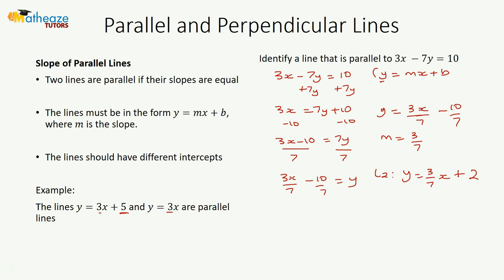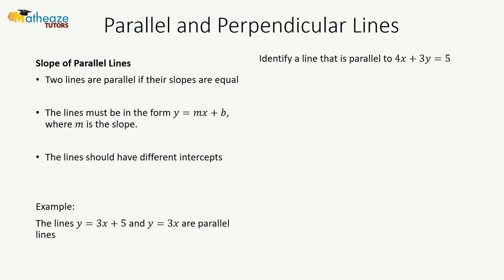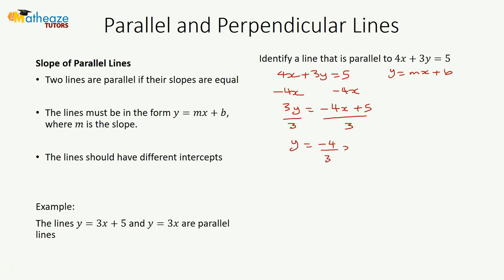Let's try another example: 4x + 3y = 5. We want to write it in the form y = mx + b, so subtract 4x from both sides: 3y = −4x + 5. Divide both sides by 3: y = (−4/3)x + 5/3. So line 2, the parallel line, is y = (−4/3)x − 6 — same slope, different intercept.